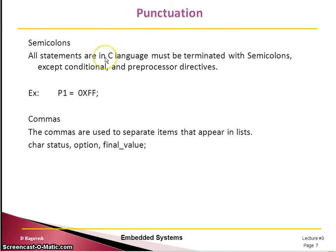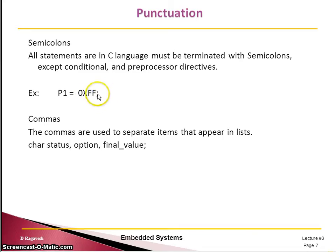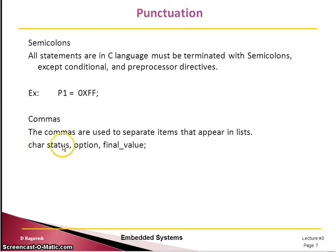Regarding punctuation — there are many punctuation marks we use in C language, and the same applies to embedded C programming. A semicolon terminates every C program statement. For example, 'P1 = 0xFF;' is terminated with a semicolon. Commas are used to declare multiple variable names — for example, 'char status, option, final_value;' where 'char' is the data type keyword, these are the variable names separated by commas, and the statement is terminated with a semicolon.